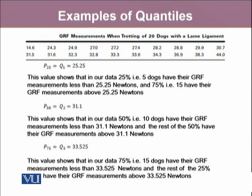Similarly, for the second quartile, which is the 50th percentile, the value turned out to be 31.1. This shows that in our data, 50 percent, which is 10 dogs out of 20, have their GRF measurements less than 31.1 Newtons, and the rest of the 50 percent have their GRF measurements above 31.1 Newtons.